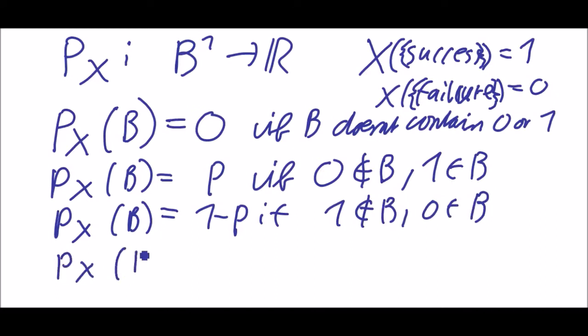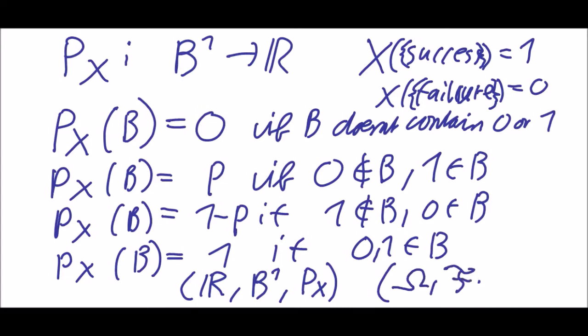And of course Px of b is 1 if 0 and 1 are in b. So Px is similar to P but it's a little bit more sophisticated and it's another probability space. It's not the same. It's R with B1 and Px, and it describes the same experiment as omega, F and P do. That is the important lesson from that.